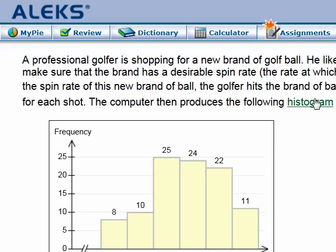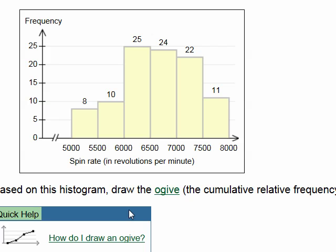To test the spin rate of this new brand of ball, the golfer hits the ball on a hundred fire iron shots and a computer measures the spin rate for each shot. The computer then produces a histogram showing the hundred spin rates for this particular brand. Based on this histogram, we need to draw the ogive — the cumulative relative frequency polygon — for the spin rate data.